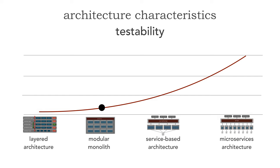If we move up the curve, we notice that modular monoliths — which are also deployed as single deployment units — increase testability a little bit. This is primarily due to the fact that modular monoliths are domain-partitioned architectures. Rather than partitioning by the technical usage of a particular domain, modular monoliths encompass that domain together. We can actually look at dependencies between domain components rather than classes, and so we can compartmentalize domains more easily, therefore decreasing the risk of breaking something else outside of our domain.